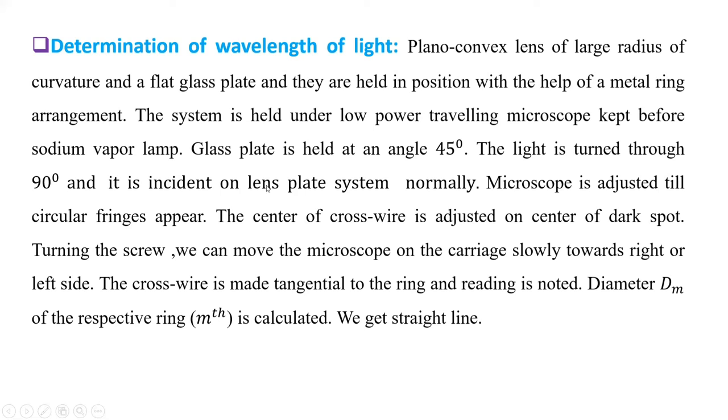We have already seen glass plate is at angle 45 degrees with the horizontal. Light is turned to 90 degrees and it is incident on the lens system normally. The microscope is adjusted till circular fringes appear in the field of view of that microscope.